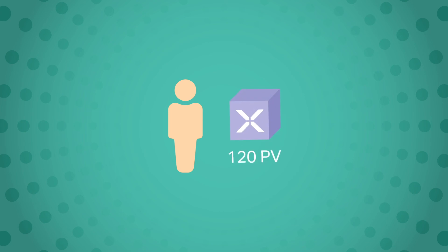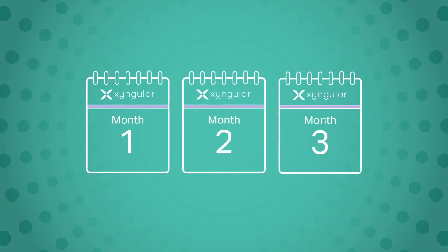For you to continue receiving Rapid Rewards, you must purchase or sell at least 120 PV worth of product each month. Believe us, you want to keep those Rapid Rewards coming.